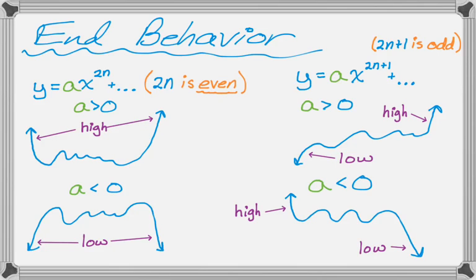These are patterns you need to remember. Even polynomials are either high to high or low to low — there's a kind of symmetry to it. Odd polynomials do something different: they start low and go high, or start high and go low. I feel like the words kind of show what is happening. Anyway, let's look at an example.